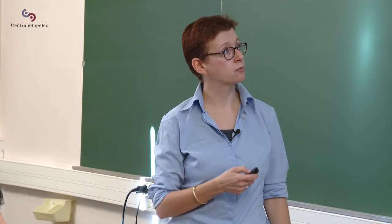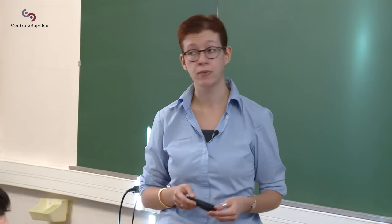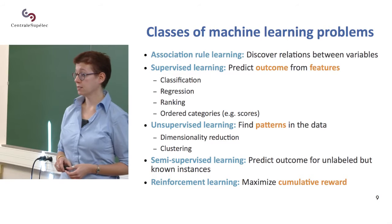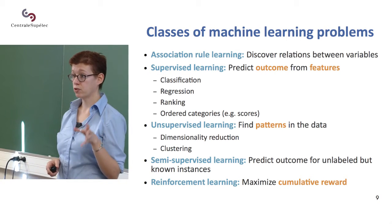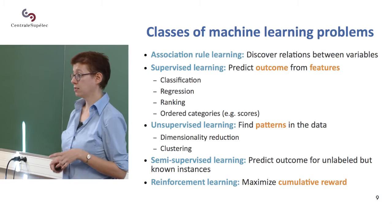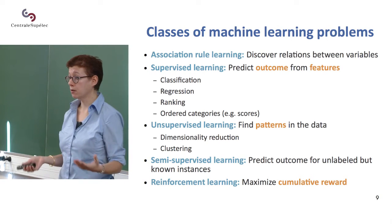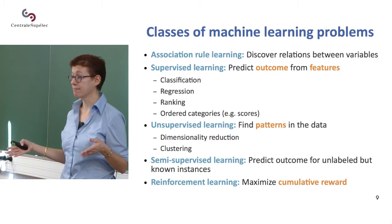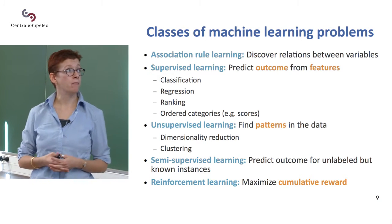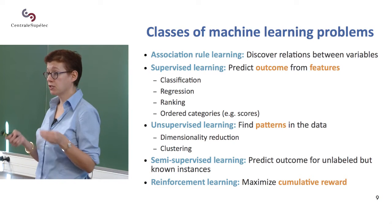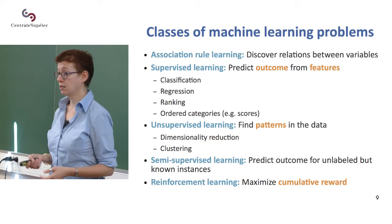Two main classes of problems we're going to talk about during this course are supervised learning and unsupervised learning. Supervised learning is to predict some sort of outcome — a label like cat or non-cat, or a number like a height, a time, or a weight — based on features or variables that describe the data.